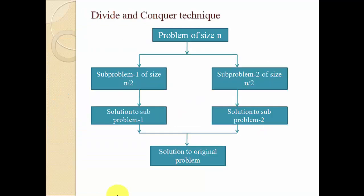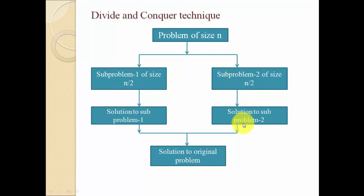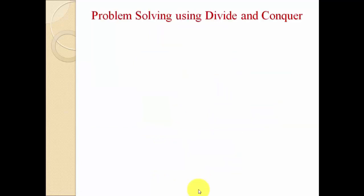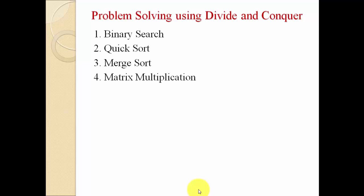As a simple example: if we have a problem of size n and divide into two parts of size n/2, we find the solution of each sub-problem and merge both solutions to get the solution to the original problem. Using this divide and conquer strategy we can solve various algorithms like binary search, quick sort, merge sort, matrix multiplication, and exponentiation. We will discuss all of these in this chapter. Let us start with the first algorithm — binary search.